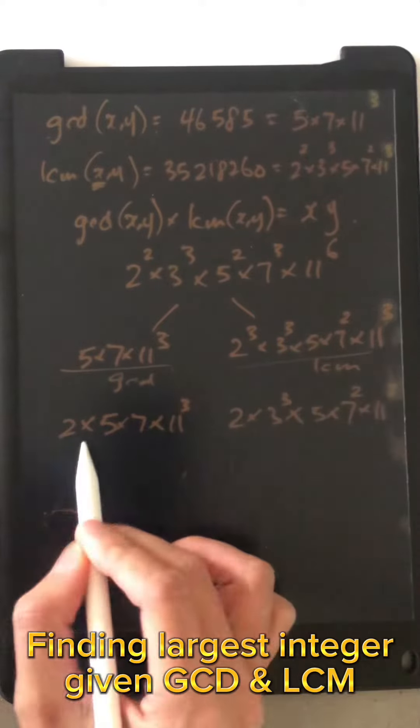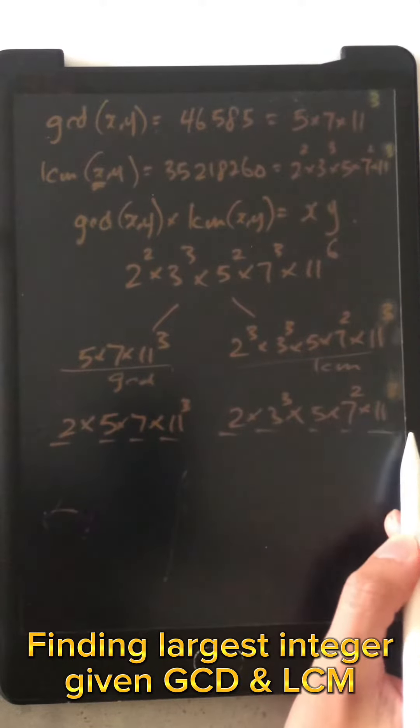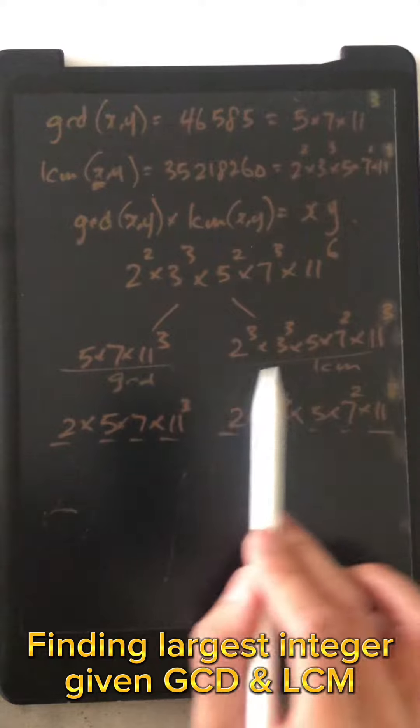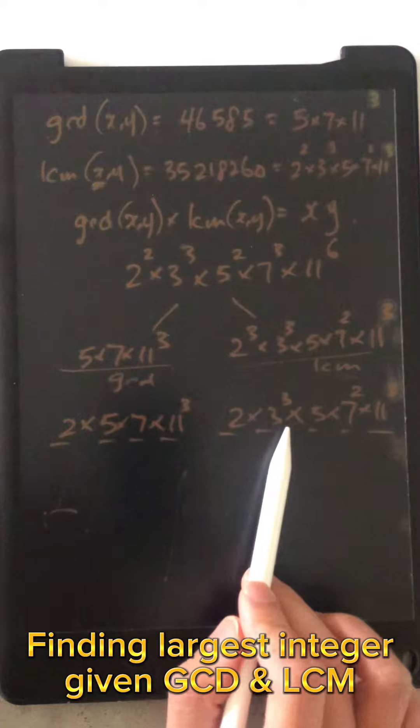Now the problem with this is, you have a 2, 5, 7 and 11 cubed, but I have also 2, 3, 5, 7 and 11 cubed. That means this number on the left is a divisor of the one on the right. So you can't pick this one as an answer, because if you use these two pairs as x and y,